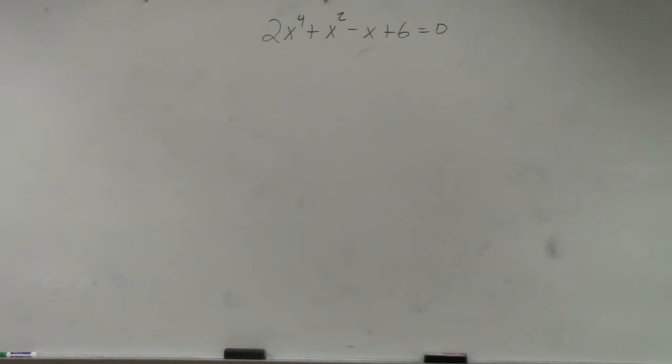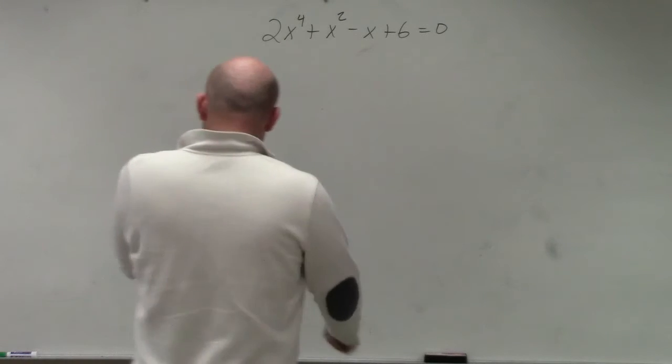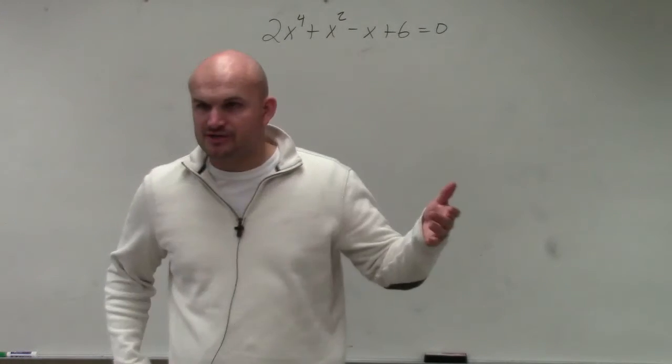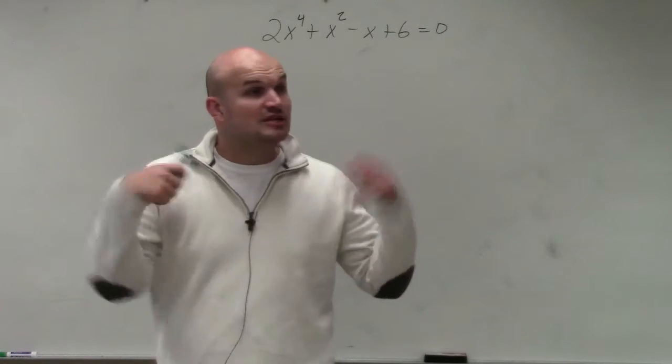Asking us to determine the number of possible real rational, real negative... I'm sorry, positive real, negative real, and then complex zeros, correct? Descartes' rule of signs. So that's all I wanted you guys to do.